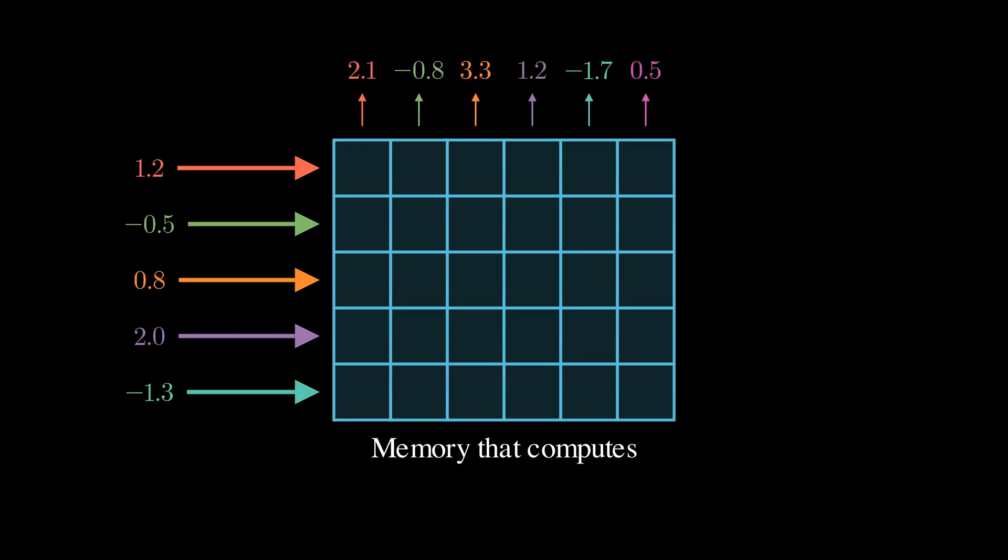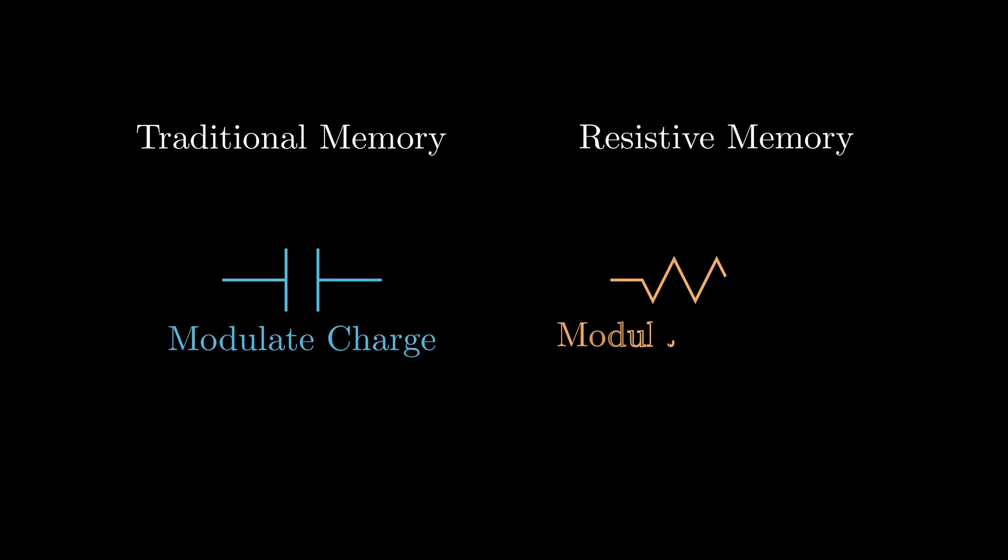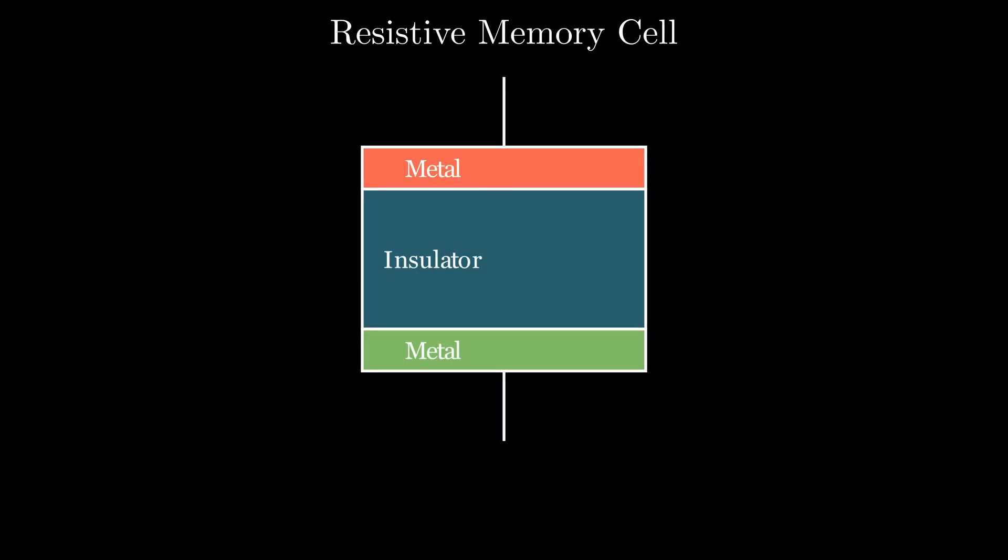The question is: what if memory didn't just store data? What if it could compute too, in a much less complex way? Resistive memory is a new kind of memory. It doesn't store data using electric charge like traditional memory.